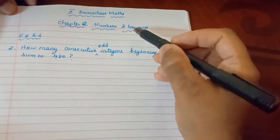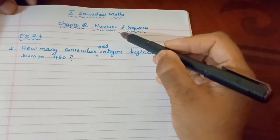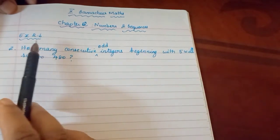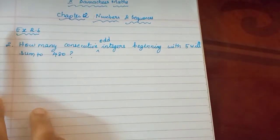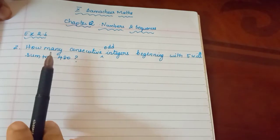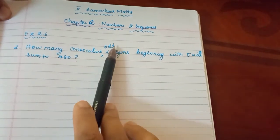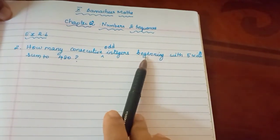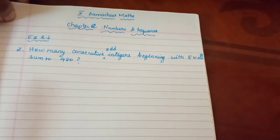Students, today we are doing 10th Samacheer Chapter 2 Numbers and Sequences. Exercise 2.6, second sum. The question is: How many consecutive odd integers beginning with 5 will sum to 480?